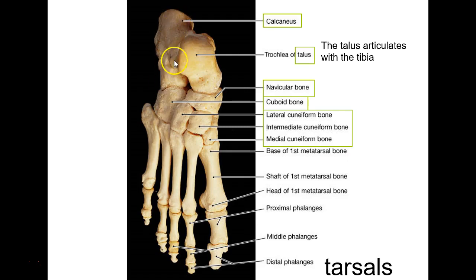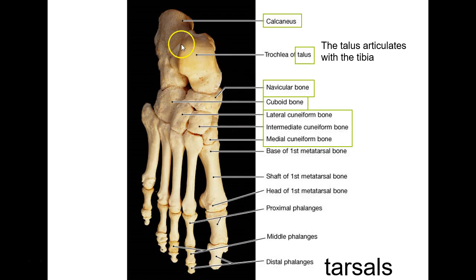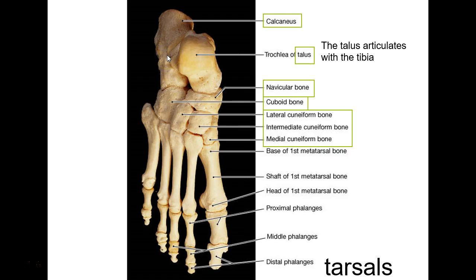In the foot, the calcaneus is your heel bone. Above it is the talus, T-A-L-U-S. The tibia rests mostly on the talus; the medial malleolus hugs up against it on the medial side, and the lateral malleolus of the fibula hugs it on the lateral side.